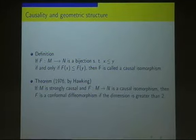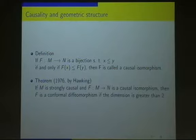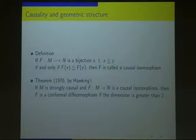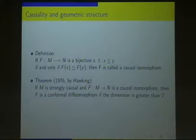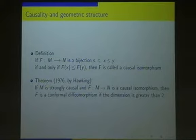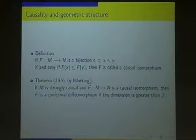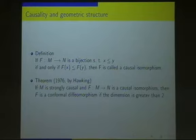Here, M and N are two Lorentzian manifolds. If there exists a bijection between these two manifolds such that the map preserves the causal relation, then F is called a causal isomorphism. In 1976, the famous theoretical physicist Stephen Hawking published this result: if the manifold is strongly causal and if there exists a causal isomorphism, then that causal isomorphism becomes a conformal diffeomorphism when the dimension is bigger than two. Please note that in this definition of causal isomorphism, we have not assumed F to be even continuous, but if it preserves the causal relation, it becomes a conformal diffeomorphism. In this sense, causal relation includes the topological structure, differentiable structure, and conformal structure of the given Lorentzian manifold.